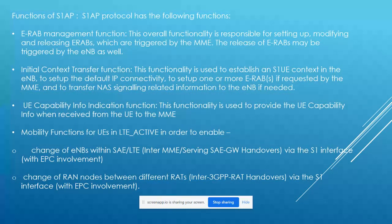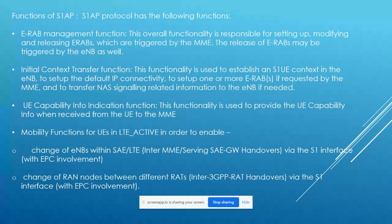Going further, we have the functions of the S1AP protocol. The first is the E-RAB management function — E-RAB stands for E-UTRAN Radio Access Bearer. This covers setting up, modifying, and releasing radio access bearers. Setup and modification are triggered by the MME, while release can be triggered by the eNodeB as well.